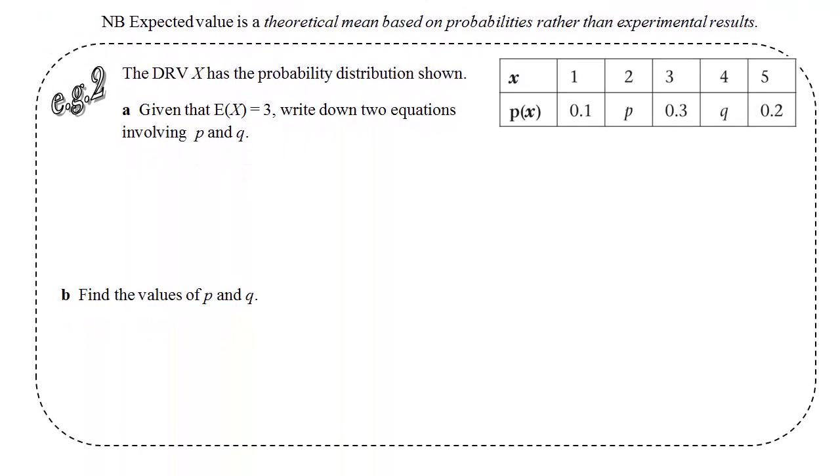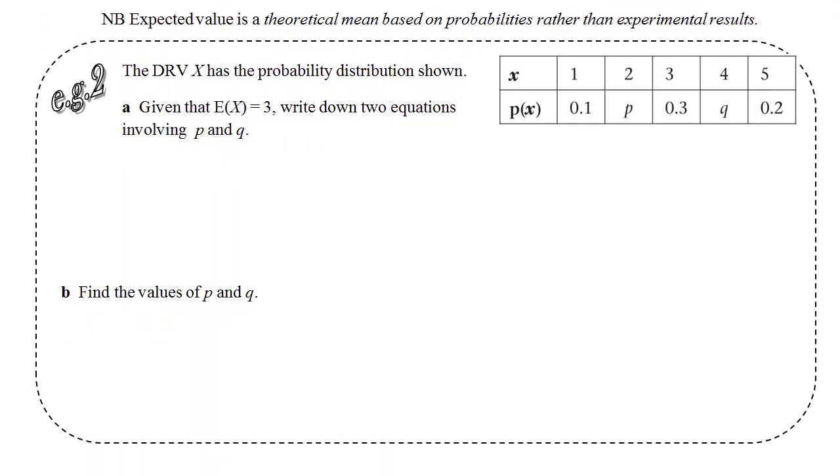Now, let's try this out in an example. Here we have a discrete random variable x, and we've got its probability distribution, but two bits are missing, p and q. We are asked to write down two equations involving p and q. That means we need two bits of information, two facts to use.